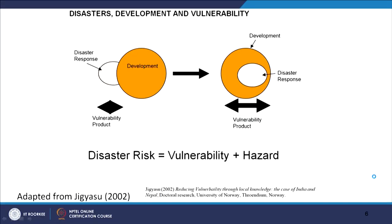I started looking at the basic concepts of the relationship between disasters, development and vulnerability. I came across a lot of literature; one person I should thank is Rohit Jigyasu's work on Nepal and Gujarat, where he talks about reducing vulnerability through local knowledge and brings models of development, disaster and vulnerability. Ideally, if development follows after a disaster in the traditional model, vulnerability should be reduced. But in reality, the disaster component within development increases the vulnerability component.